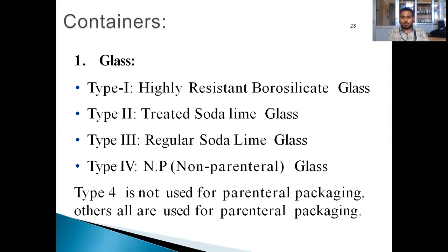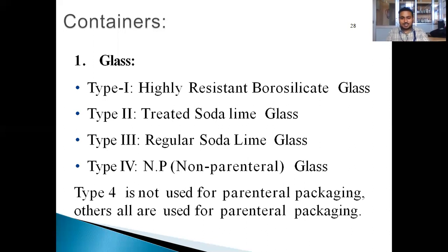Next, let's discuss containers — the packaging materials used for parenterals. The first is glass. Glass is mainly of 4 types: Type 1, Type 2, Type 3, and Type 4. Type 1 glass is IV-resistant borosilicate glass. Type 2 is treated soda lime glass. Type 3 is regular soda lime glass. Type 4 is non-parenteral glass, which is not used for packaging of small-volume and large-volume parenterals.